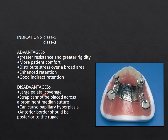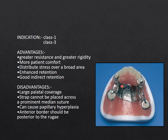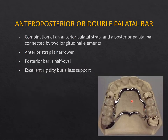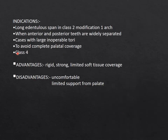Disadvantages of the palatal strap: large palatal coverage is problematic when a prominent mid-palatal raphae is present, or when the patient has tori or exostosis — seen in almost every third person in the Penang population, making this design contraindicated. If not properly cleaned it will cause papillary hyperplasia of the palate. The anterior border should always end posterior to the rugae. In cases with large tori, the strap can bypass the tori on either side, which is a good indication for use.